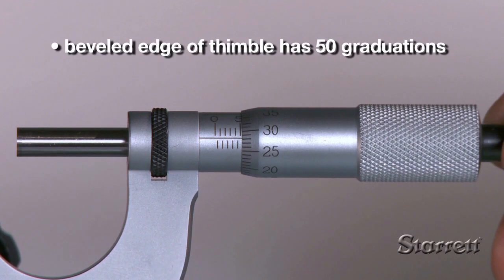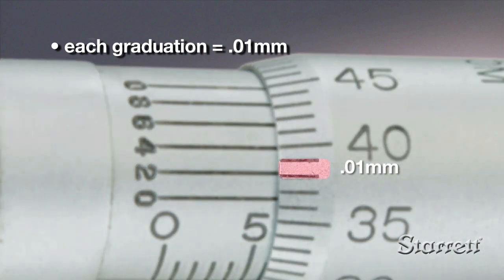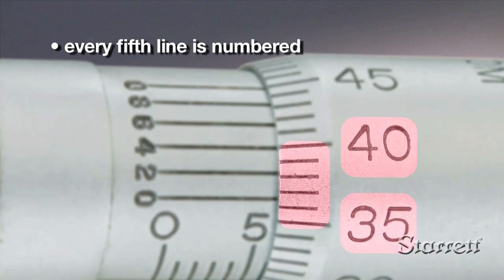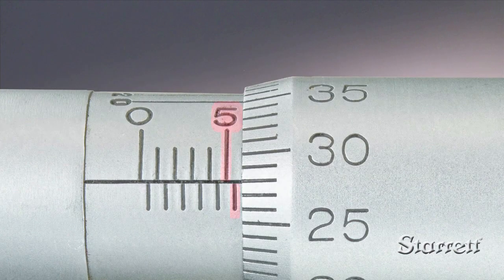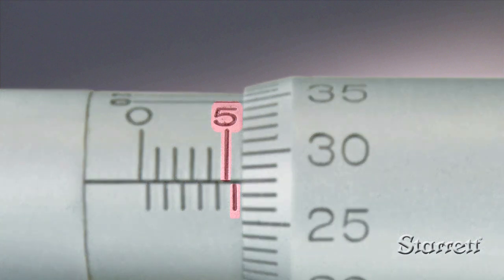The beveled edge of the thimble has 50 graduations, each representing 0.01 mm. Every fifth line is numbered. The number of mm plus half mm visible on the sleeve plus the hundredths of a mm on the thimble is your measurement.